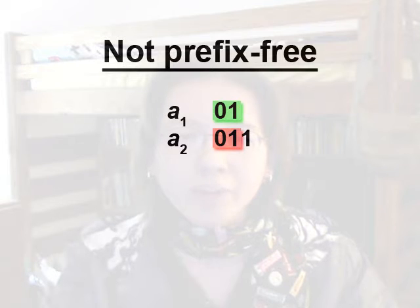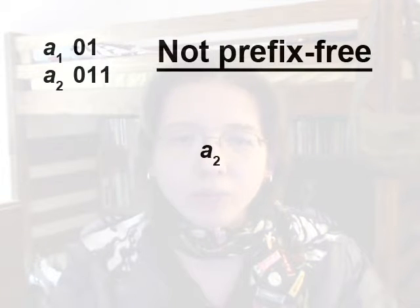01 is a prefix of 011. Now, suppose we had a message that was just one symbol, symbol 2. It would be encoded as 011. Since the codewords have different lengths, we're using a variable length code.